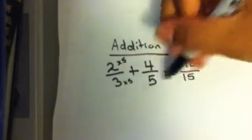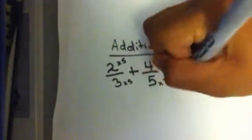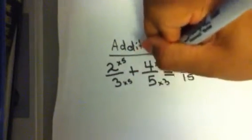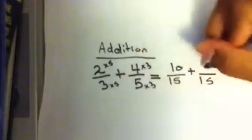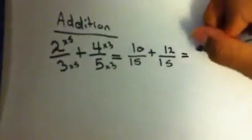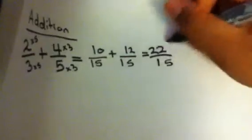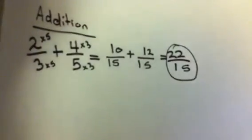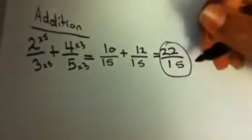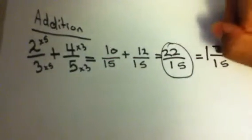Now you do the same thing for the other fraction. 5 turning into 15, so 5 times 3 is 15. And then 4 times 3 equals 12. So 5 times 3 equals 15 and 4 times 3 equals 12. The answer brings you to 22, so 22 over 15. And that, as you can see, is an improper fraction. In fractions, we do not leave it as an improper fraction — we change it back to a mixed fraction, which would be 1 and 7 over 15.